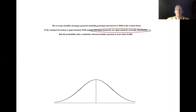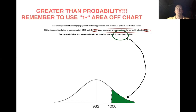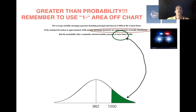Let's look at another example. We're normally distributed, so we sketch the curve with $982 in the middle. We're interested in x = $1,000, but this time the question asks for more than $1,000 — so we want a greater-than probability, meaning we're looking at the area above 1,000. Important: as soon as we see a greater-than probability, we must do 1 minus the area from the chart, because the chart only gives less-than probabilities.